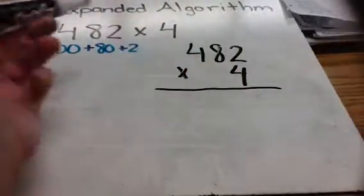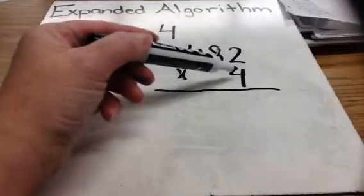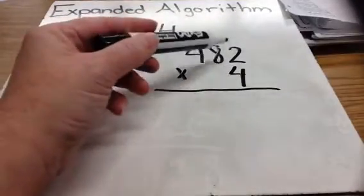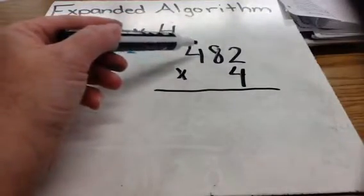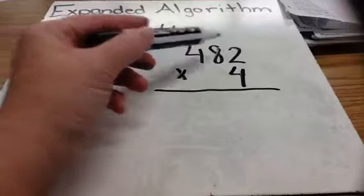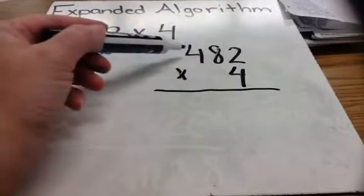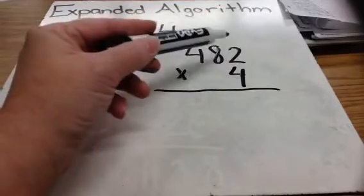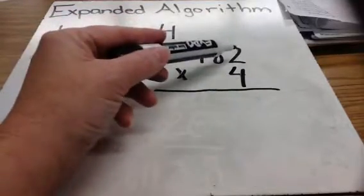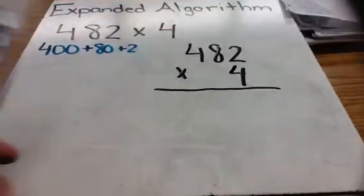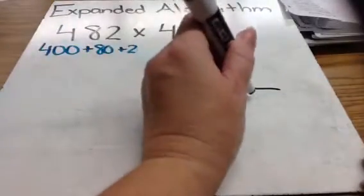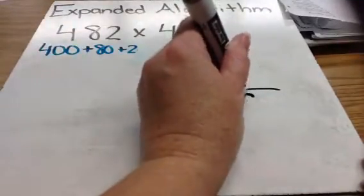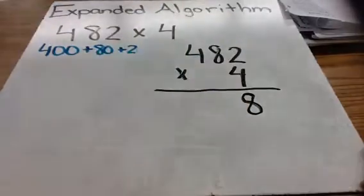Now, I need to multiply 4 times each piece of this expanded number. I'll start with 4 times the 2 in the ones place. I know that 4 times 2 ones equals 8, so I'll put 8 right below the line.